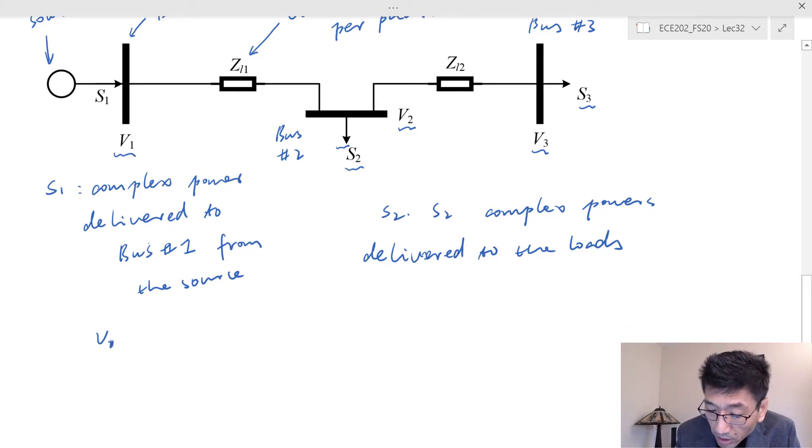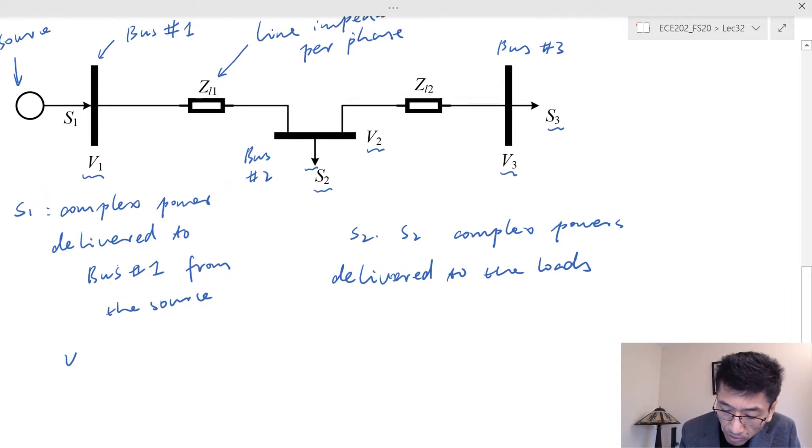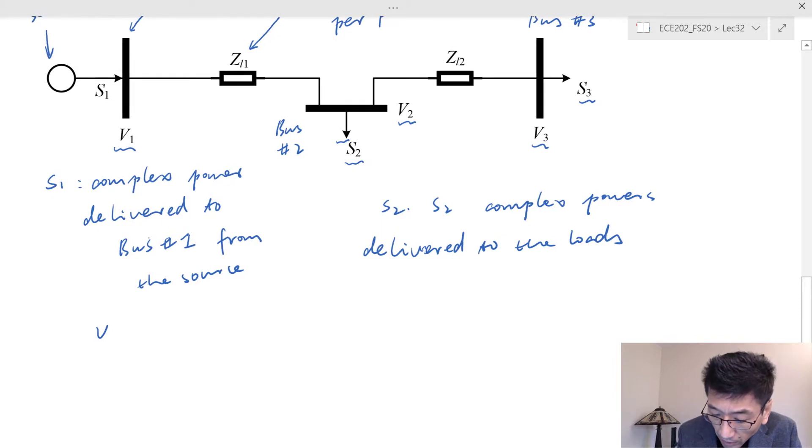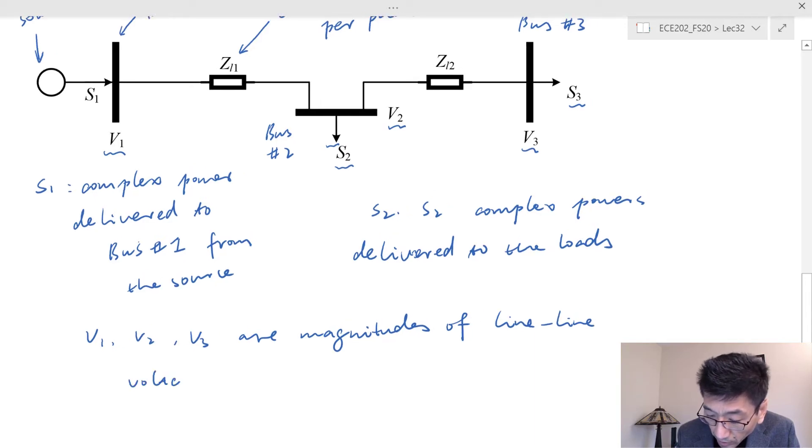Of course, we're going to use the RMS value, so V1, V2, and V3. These are the magnitude, the amplitude of the line-to-line voltages at each bus, bus number one, two, and three.